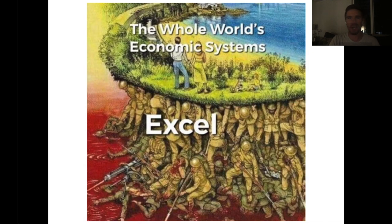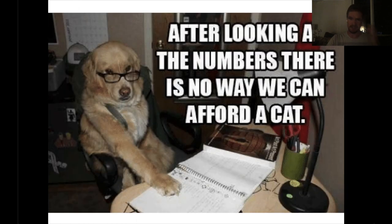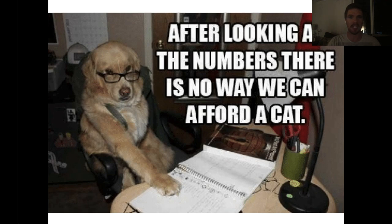This shows just how impactful Excel is on the entire economy. This meme represents how spreadsheets have dumbed down the math required to do pretty powerful and important things. There's also a meme of a dog with glasses saying he cannot afford a cat. This video is meant to dovetail into a discussion about generative pre-trained transformers via a chat interface — also known as ChatGPT — which is kind of the next evolution of business, the way Excel drastically changed how business is done.